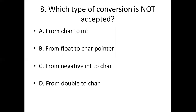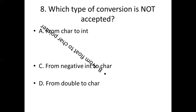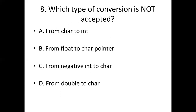Eighth bit: Which type of conversion is not accepted? Option A: from char to int. Option B: from float to char pointer. Option C: from negative int to char. Option D: from double to char. Answer: Option B, from float to char pointer.